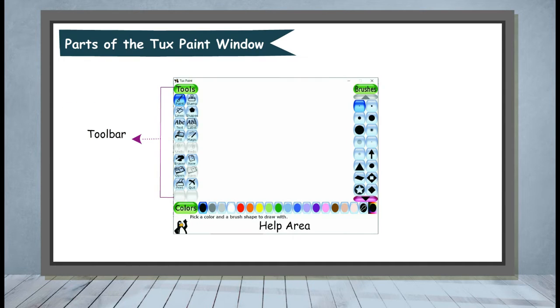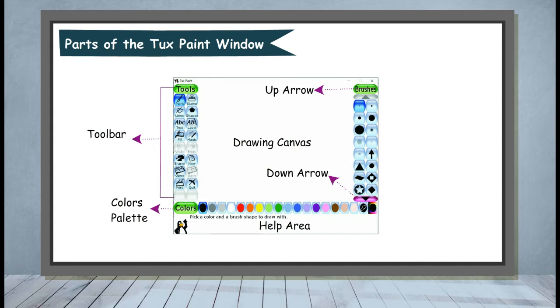The main parts of Tuxpaint include: Toolbar, Colors Palette, Drawing Canvas, Up Arrow, Down Arrow, and Selector Pane.